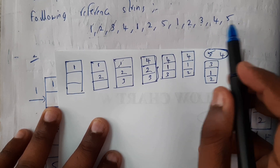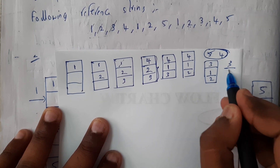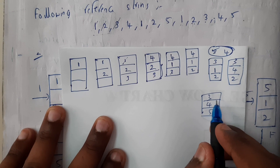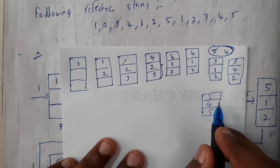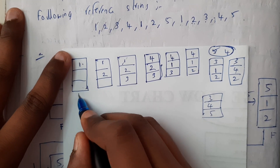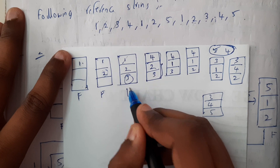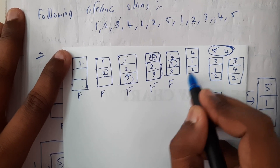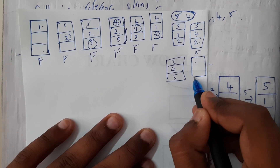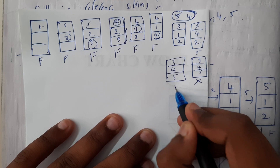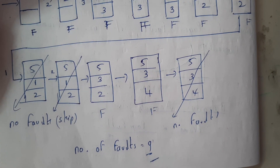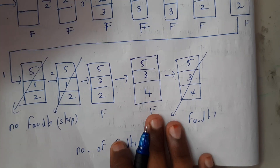Continuing: page 4 arrives, replacing the oldest (page 1) — frames become [3, 4, 2]. Then page 5 arrives; oldest is page 3, replaced — frames [5, 4, 2]... wait, let me recheck. After completing the full reference string, wherever a replacement occurred it is counted as a fault. Every time we inserted into an empty slot or replaced a page, that is a fault. Counting all faults through the sequence gives us nine page faults.